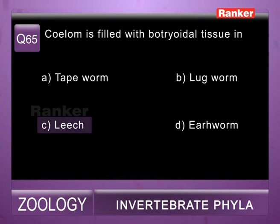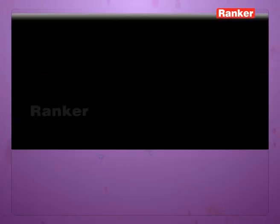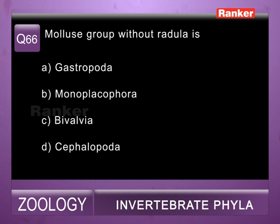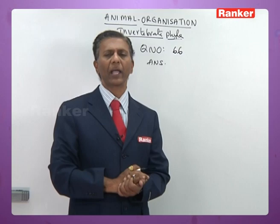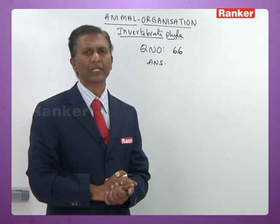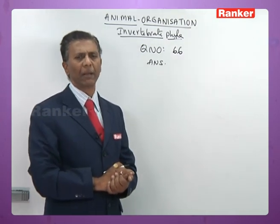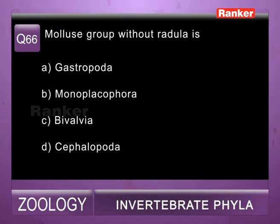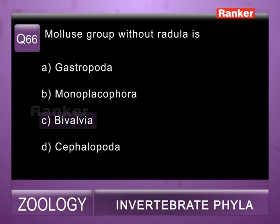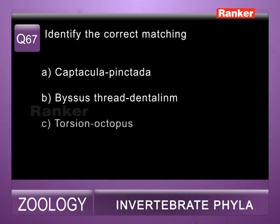Question sixty-six: molluscan group without radula — a) Gastropoda, b) Monoplacophora, c) Bivalvia, d) Cephalopoda. In Bivalvia, radula is replaced by crystalline style that helps in carbohydrate digestion by secreting amylase. So sixty-sixth question correct answer is c) Bivalvia (Pelecypoda).